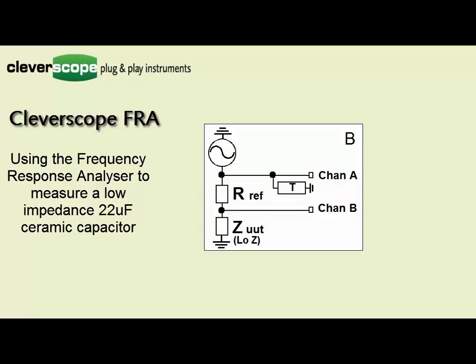Here's the schematic of circuit B which is what we'll be using to implement the jig. The signal generator drives a very small loop through RF and the unit under test. This loop has to be low inductance to avoid polluting our measurements.